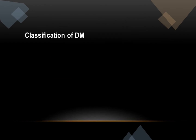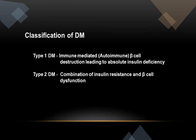Now let's talk about the classification of diabetes mellitus. There are different types. Type 1 diabetes mellitus involves immune-mediated beta cell destruction leading to absolute insulin deficiency. In Type 1, you do not have insulin.